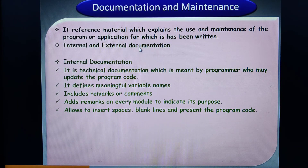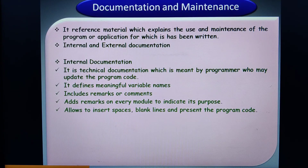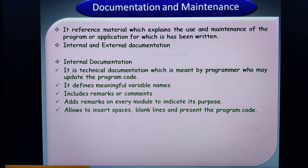External documentation consists of additional textual information about the application or program. As with a user's manual when you buy a product — it contains all the instructions on how to operate the product, which is extra additional textual information helping users understand how to use it. This is what we call external documentation. It is useful for users, developers, and administrators.